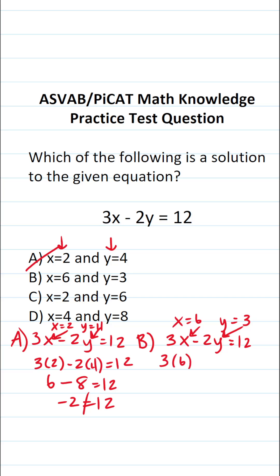This becomes 3 times 6 minus 2 times 3 equals 12. 3 times 6 is 18, minus 2 times 3 is 6, equals 12. 18 minus 6 is 12. Does 12 equal 12? Since this is a true statement, x equals 6 and y equals 3 is the solution to the given equation. So the answer is B.